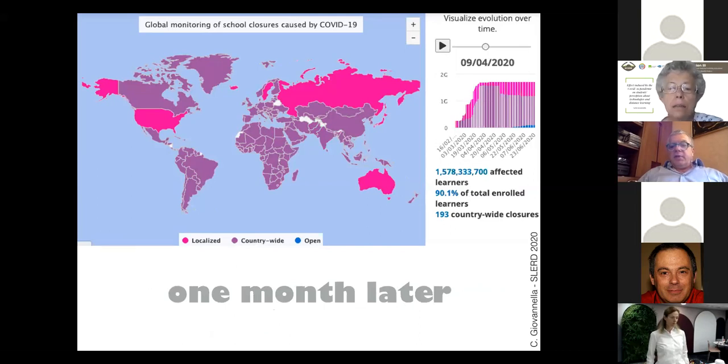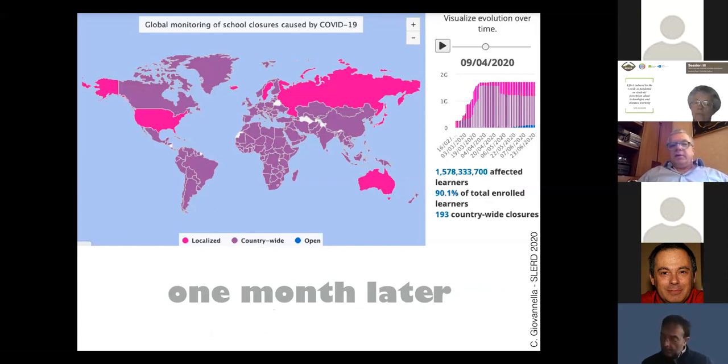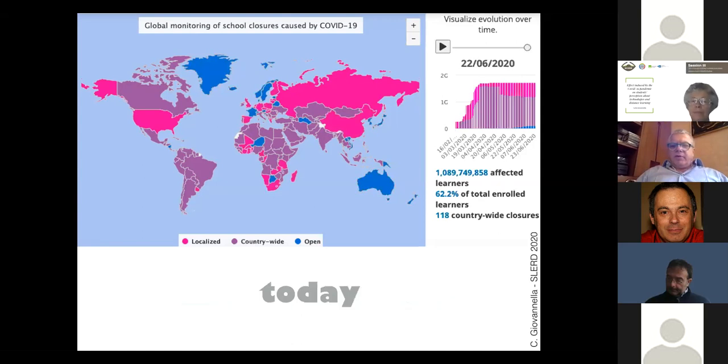One month later, 1.5 billion learners were in a lockdown condition, corresponding to about 90 percent of total learners in 193 countries, basically the world over. This gives you an idea—it's a tragic event, but also a huge experiment that could never have been carried on in any other way. This is the present situation, and slowly things are getting better in some nations, with schools and institutions reopening.